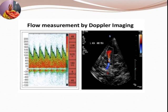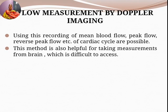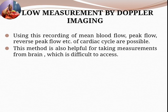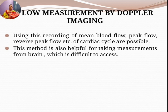Using Doppler imaging, you can see the scanning image of internal blood vessels. With this recording, mean blood flow, peak flow, reverse peak flow, etc. of the cardiac cycle are measurable. This method is also helpful for taking measurements from the brain, which is otherwise difficult to access.